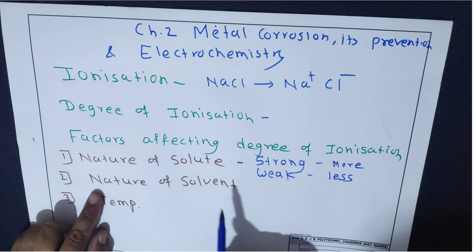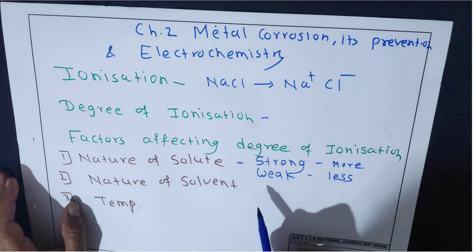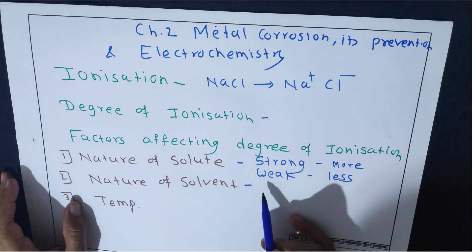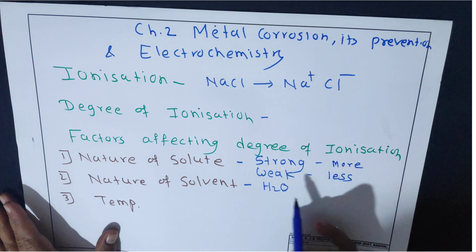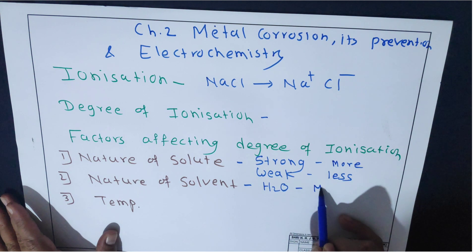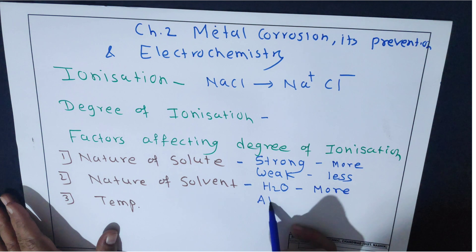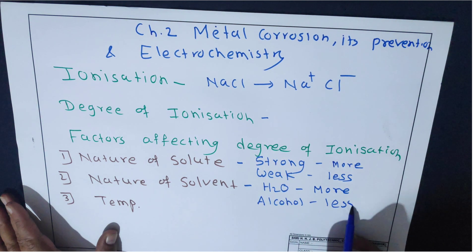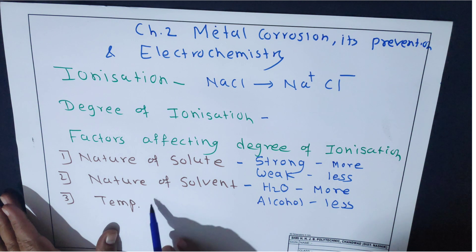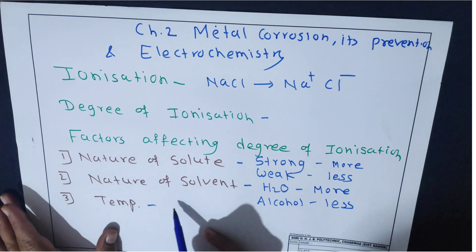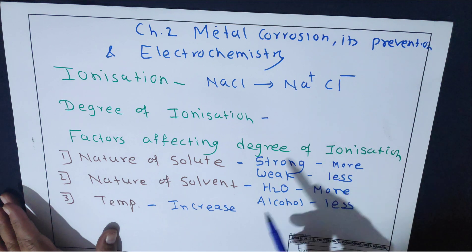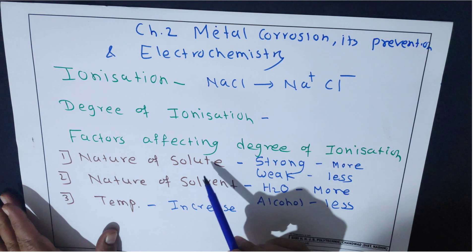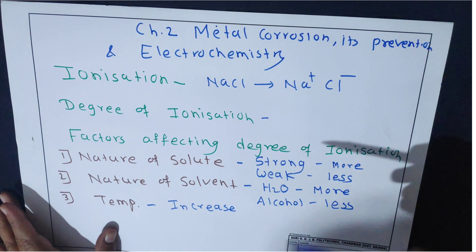The second factor is nature of solvent. The degree of ionization depends on which solvent is used. If water is used — which is also known as the universal solvent — then degree of ionization will be more. If alcohol is used, degree of ionization will be less. The third factor is temperature. With increase in temperature, degree of ionization increases — that means in hot or warm water, degree of ionization will be greater compared to cold water.